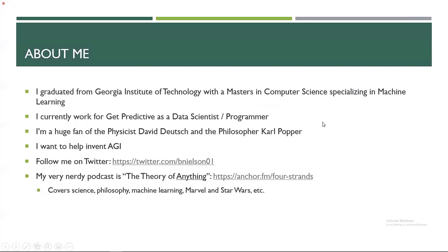About me: I graduated from Georgia Tech with a master's degree in computer science specializing in machine learning, and I'm currently working with MindFire and Get Predictive. I'm interested in AGI, and I have a nerdy podcast called The Theory of Anything Podcast. This presentation will actually be one of my episodes — I'll probably do it again over the weekend.